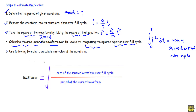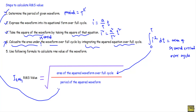After that we will use the RMS formula: i_rms equals the square root of the area under the squared waveform divided by the period. We will put the integration value from step four here, put the period value from step one, and take the root over it to get i_rms. Now let me calculate the area under the squared waveform over the full cycle.